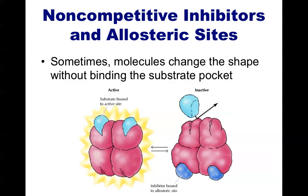Sometimes a molecule can affect the activity of an enzyme by binding somewhere other than the substrate binding pocket. Drugs that slow down enzymes this way are known as non-competitive inhibitors, because they can change the enzyme's shape and activity without directly competing with the substrate for the active site. The non-competitive inhibitor binds to another part of the enzyme known as the allosteric site, which nonetheless can affect the overall shape of the enzyme. Our own body uses this strategy to either slow down or speed up enzyme activity naturally.